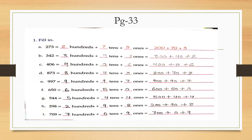Now, Part G: the number is 544. Digit 5 is at hundreds place, 4 is at tens place, and 4 is at ones place. You will write: 5 hundreds + 4 tens + 4 ones. In expanded form: 500 + 40 + 4. This is the expanded form of 544.